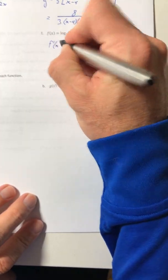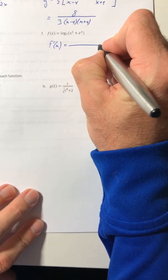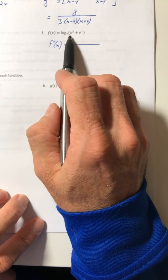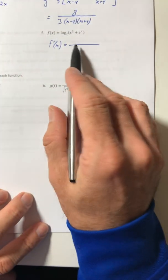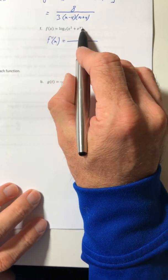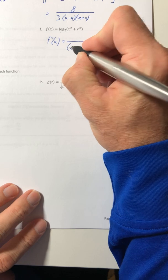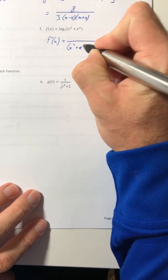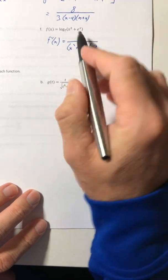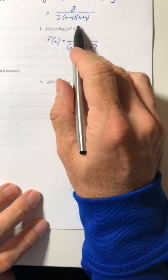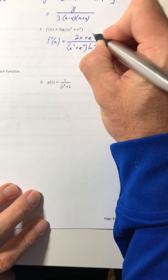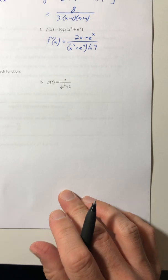So anytime you have the derivative of a log, whether it's a log-based something or an ln, you're going to end up with fractions. So I just put a fraction. So whatever's inside the log goes underneath, as well as ln of the base, or ln of 7. And then on top is the derivative of what's inside the log. So the 2x plus e to the x plus e to the x.